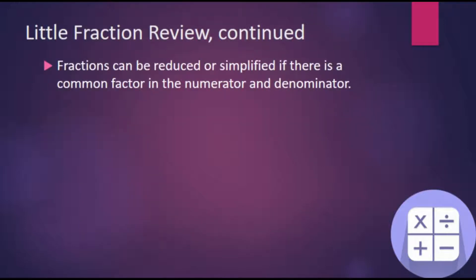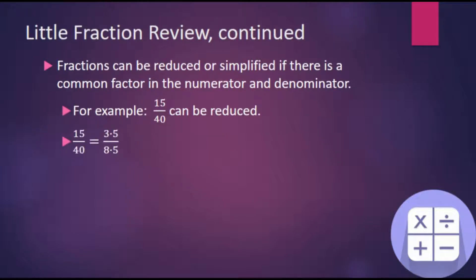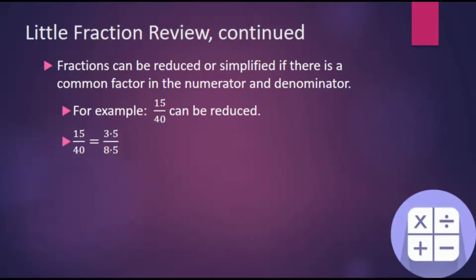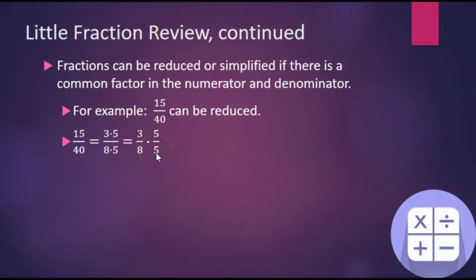Of course, working with fractions we always want to reduce or simplify. Here's an example: 15 fortieths can be broken down into 3 times 5 in the numerator and 8 times 5 in the denominator. We now see a common factor of 5 in the numerator and denominator. Separating into two fractions, we see that 5 over 5 is equivalent to 1, and 1 times anything is that fraction. We've thus reduced the original fraction.